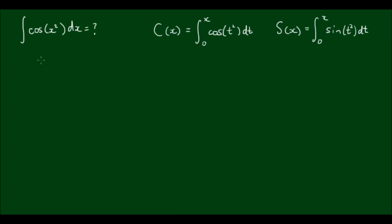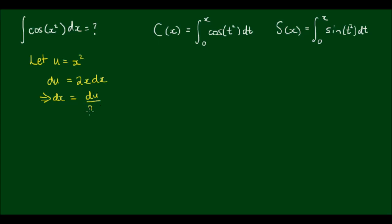But how do we go about integrating this? You might think that this expression is simple enough that we can use a substitution. So let's see how that would work. If I use a simple u substitution, let u equal x². Then du equals 2x dx, and solving for dx gives dx equals du over 2x. This means that dx can't be written independently of x, so unfortunately this substitution won't work.